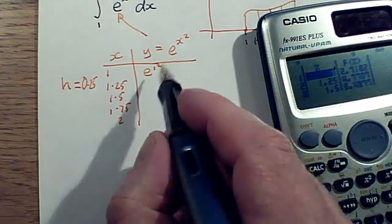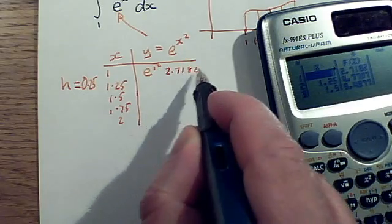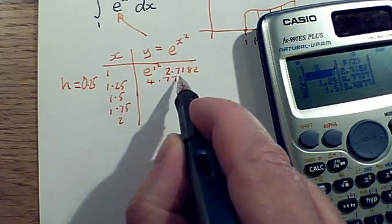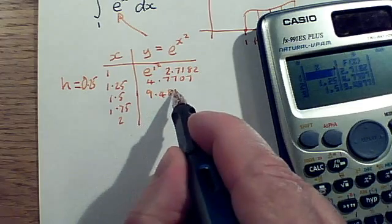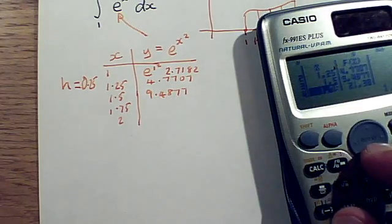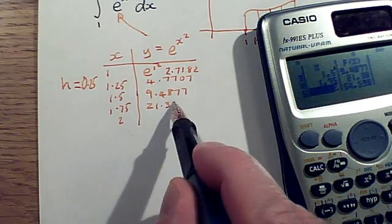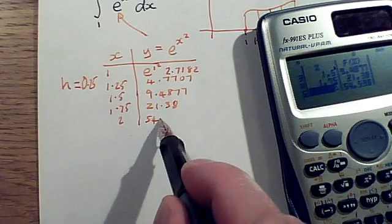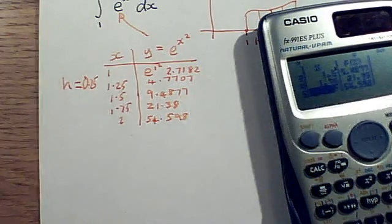So the first one is 2.7182. And the next one is 4.7707. And 9.4877. Let me go down for the other two. It's then 21.38 and 54.598. E to the x squared is a very rapidly growing function.